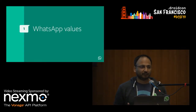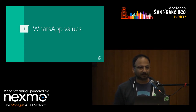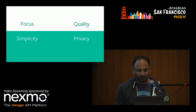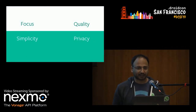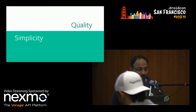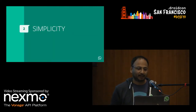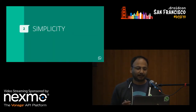A lot of why WhatsApp is fast and reliable comes from the values. So I'm going to go over the WhatsApp values. We have four values: focus, simplicity, quality, and privacy. Today I'm going to talk mostly about simplicity and quality. Let's dive into simplicity.